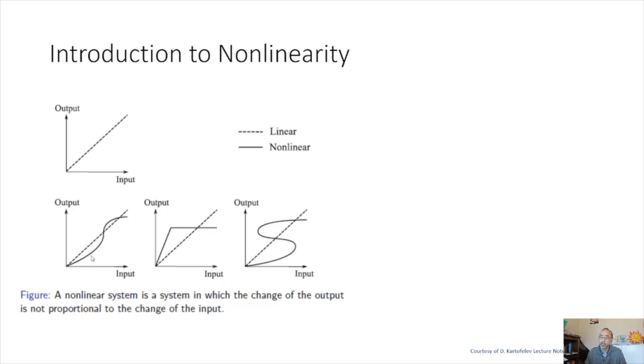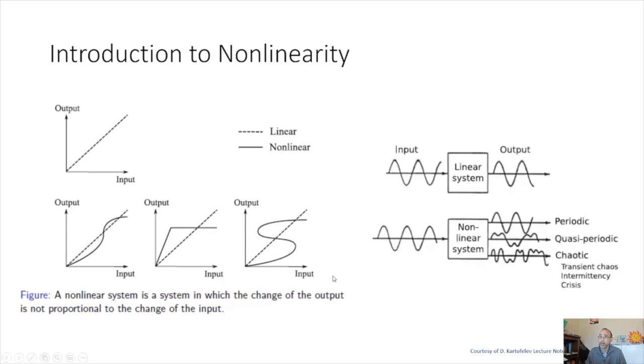Nonlinear systems, however, tend to produce nonlinear responses, things that are not in direct proportion to the input, and these are various examples of nonlinear output. And what differentiates nonlinear systems from linear systems is that you can get all different kinds of output to a specific signal.